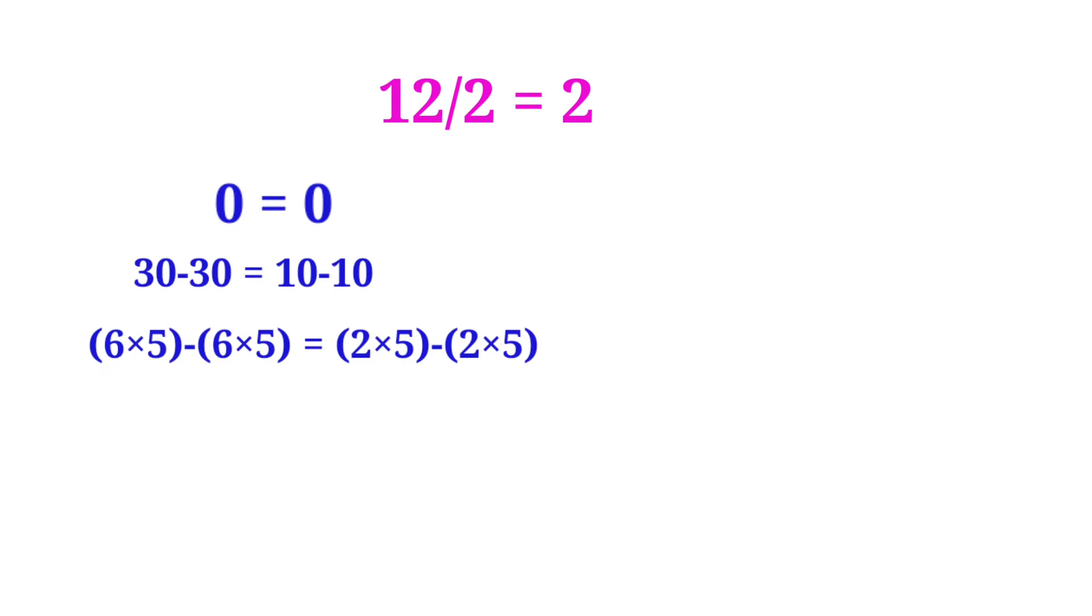Now see here in the left side 6 is common, and in the right side 2 is common. So now we can take the common terms. Then we can write this as 6×(5-5) is equal to 2×(5-5).